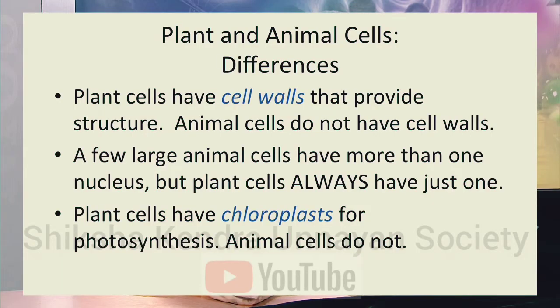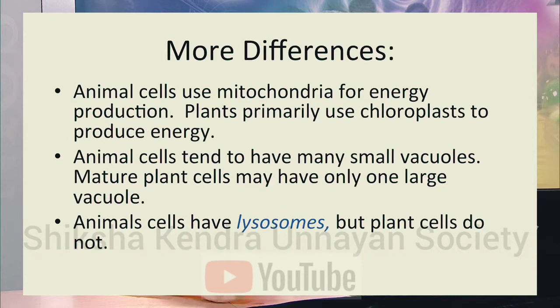Despite these similarities, plant and animal cells also differ significantly. Plant cells have a cell wall that provides structure, while animal cells do not. Plant cells have chloroplasts for photosynthesis and energy production, but animal cells do not. Animal cells tend to have many small vacuoles, whereas plant cells have one large vacuole. Animal cells also have lysosomes containing destructive enzymes, but plant cells do not have these membrane-bound organelles.